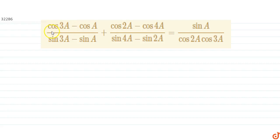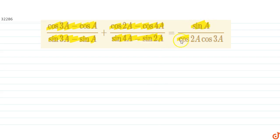In this question we have to prove that (cos3a - cosa)/(sin3a - sina) plus (cos2a - cos4a)/(sin4a - sin2a) is equal to sina divided by cos2a times cos3a. We will start from the left hand side.